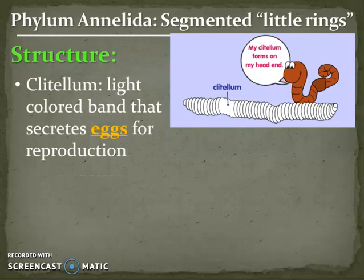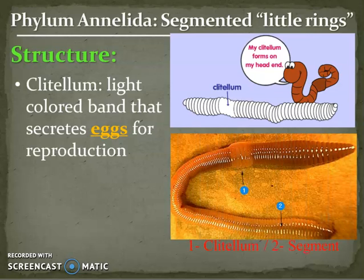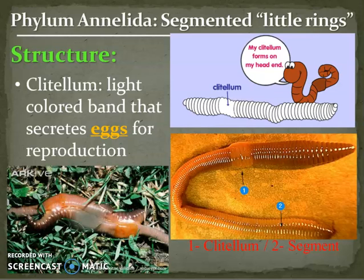Toward the head region of the earthworm, or any annelid, is the clitellum. This clitellum is a light-colored band - it almost looks like it's wearing a Band-Aid. This is where the worm secretes eggs in order for reproduction to happen. Here's a picture of a real earthworm, and you can see that clitellum labeled number one - that is where the eggs are going to be secreted. There's also a picture of two worms where both have a clitellum, showing reproduction.